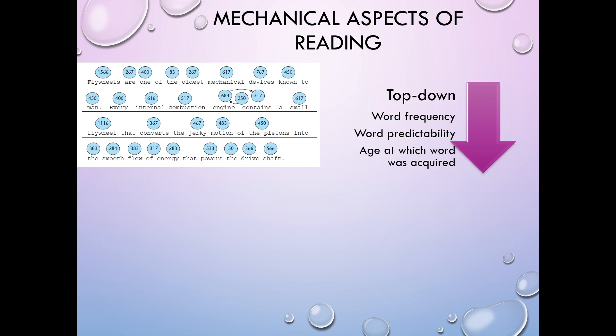Now the top-down aspects: word frequency—if it's a really common word we're going to see smaller fixations, shorter fixations. If the word is really predictable given the other things that you've been reading so far, you'll have a smaller fixation. And the younger you were when you acquired the word as a word that you knew how to read, the less time you'll need to fixate on that word. So that really implies practice and familiarity being really super important for being able to recognize words really easily.